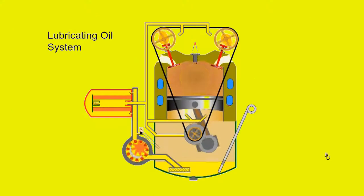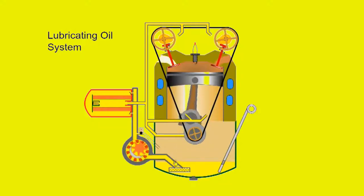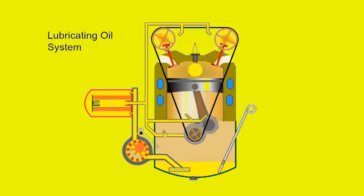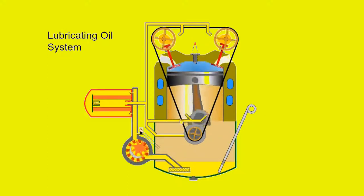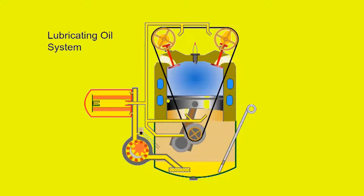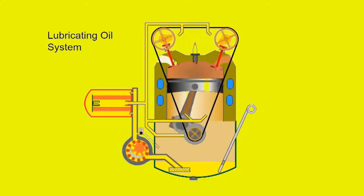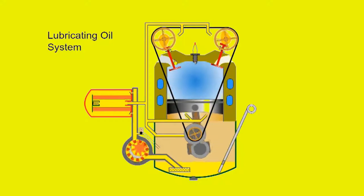The lubrication system must deliver clean oil at the correct pressure and temperature to lubricate all parts of the engine. The forced oil system lubricates moving parts reducing wear, provides a seal, removes heat and reduces power loss. First we look at the individual components.